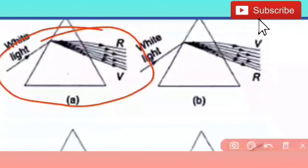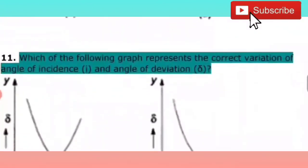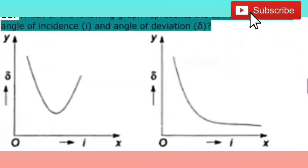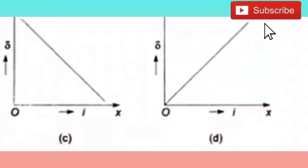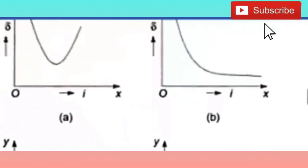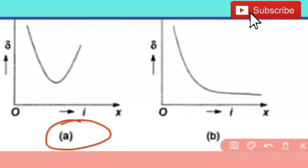The next question: which of the following graphs represents the correct variation of angle of incidence and angle of deviation? From the four graph options, the right answer is A — A is the right answer.